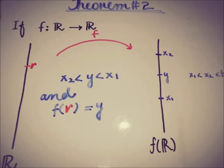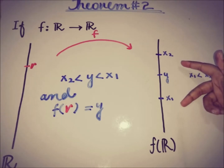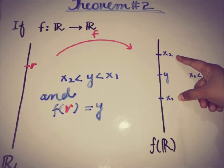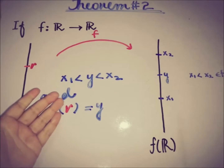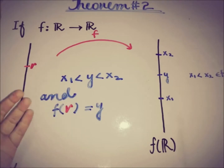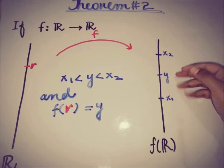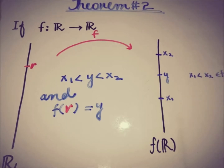To summarize the statement: if we have a continuous function from ℝ to ℝ, and there are two elements x1 and x2 in f(ℝ) with x1 less than x2, then for any element y with x1 < y < x2, there must exist an element r in ℝ such that f(r) = y. That is the statement, and now we move towards the proof.